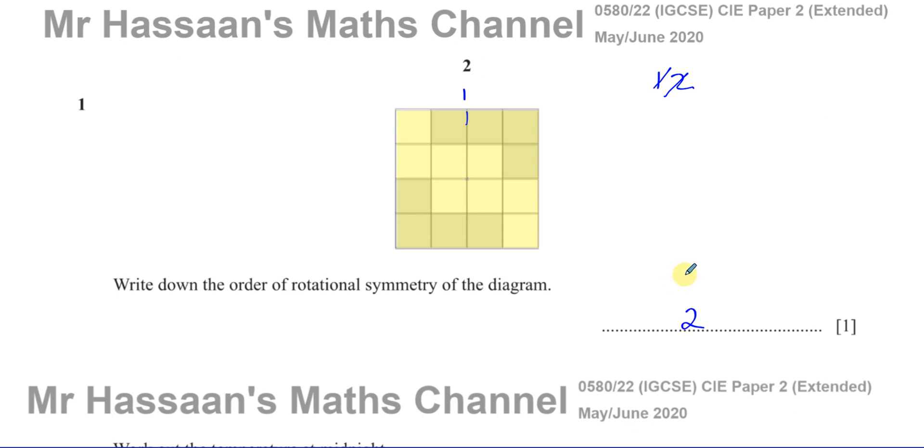It's very important that you understand. It's the number of times the object fits over its outline in one complete revolution. So if there was no shading here, it was all shaded by the same thing, it's exactly uniform inside it. This would have an order of rotational symmetry of 4 because it fits over itself four times. But because the shading is there, you have to consider that. So if something has no rotational symmetry, its order of rotational symmetry would be 1 because it wouldn't fit over itself except through one whole revolution.